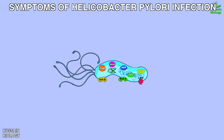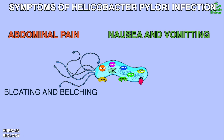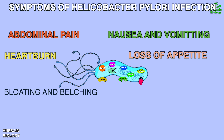Now let's have a look at the symptoms of Helicobacter pylori infection. The symptoms may vary and some people may not experience any symptoms at all. However, common symptoms include abdominal pain or discomfort, nausea and vomiting, bloating and belching, heartburn, loss of appetite, and unintentional weight loss.